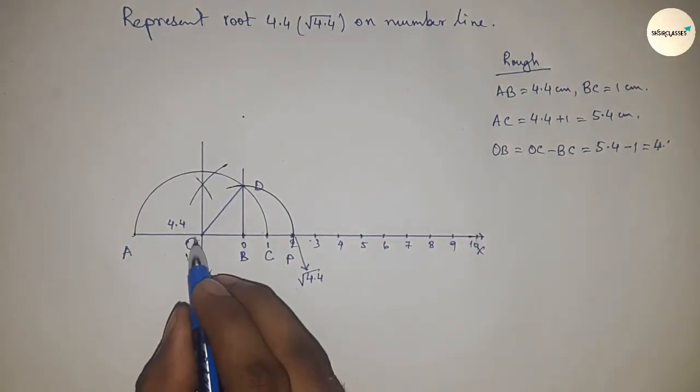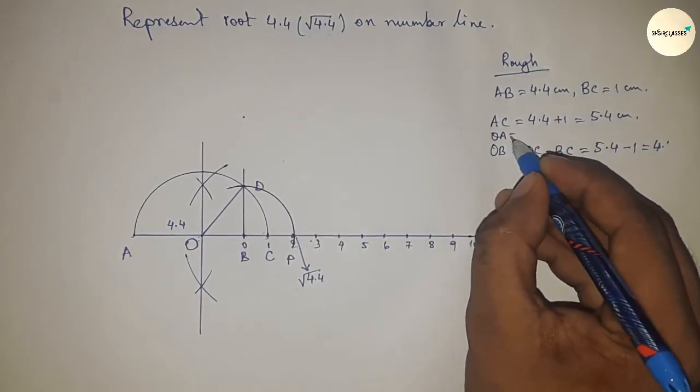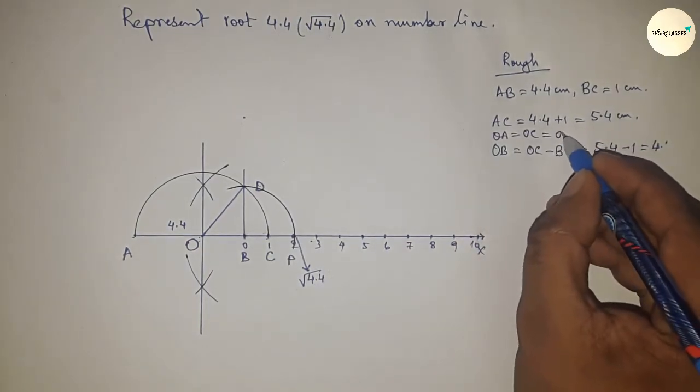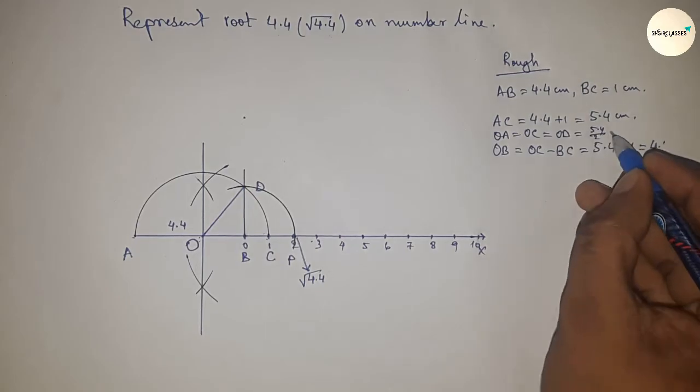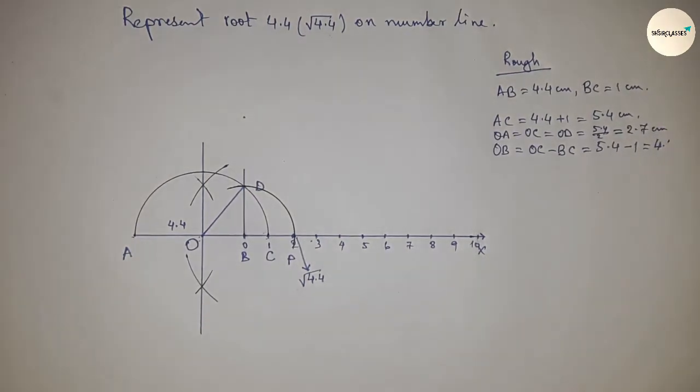First having to find the radius of the semicircle, so the same radius as OA, OC, and OD equal to 5.4 by 2 equal to 2.7 centimeter.